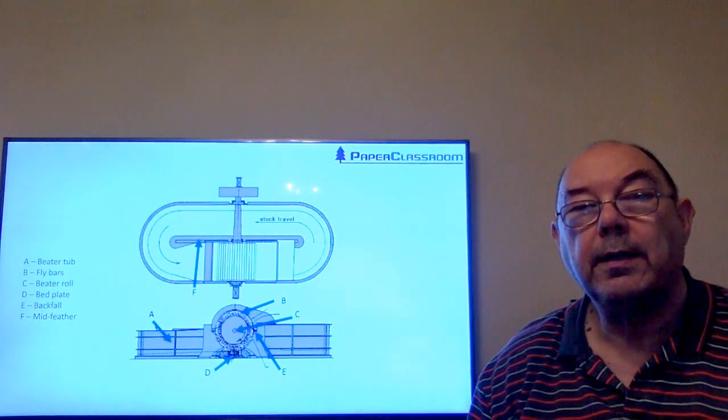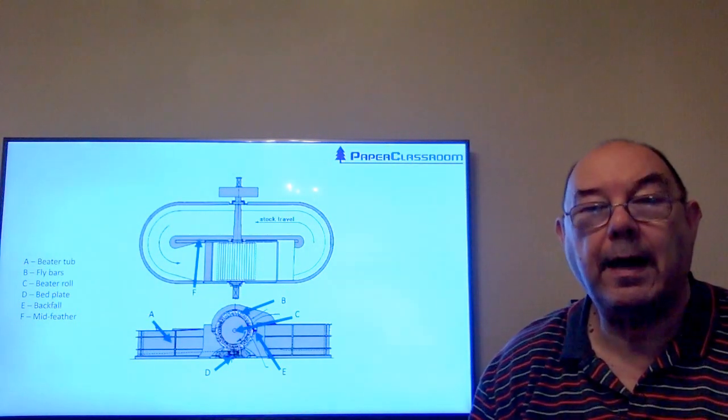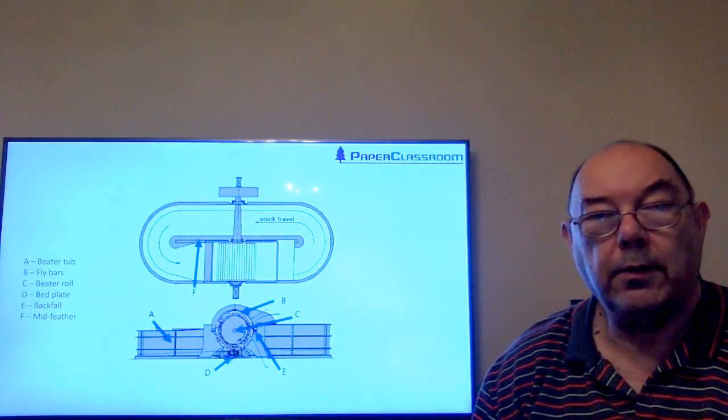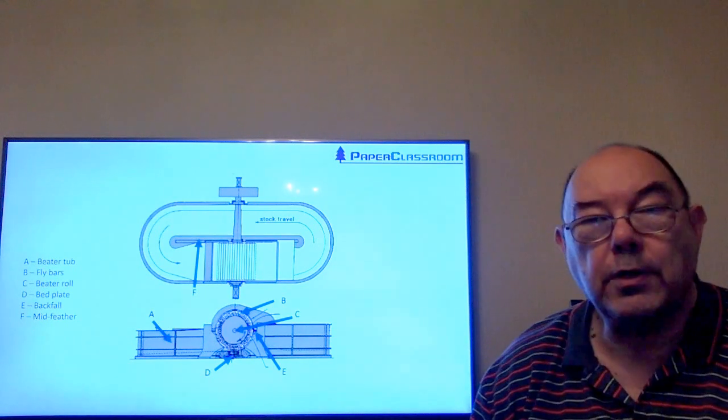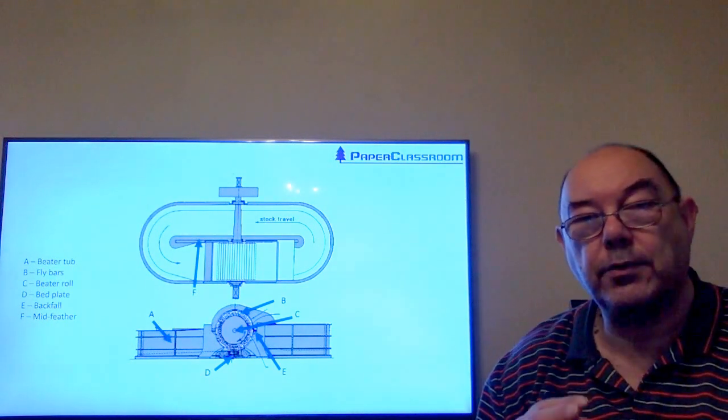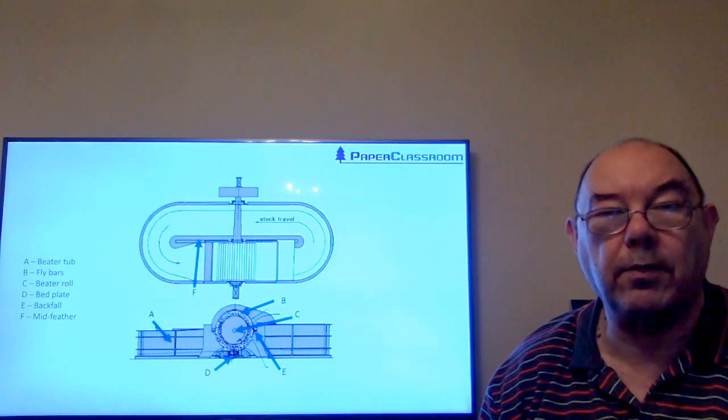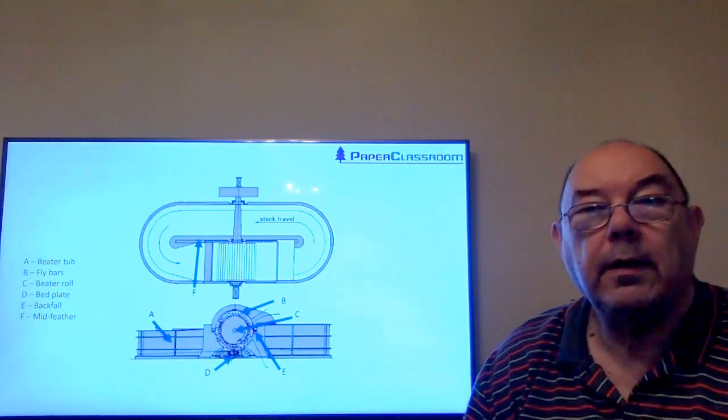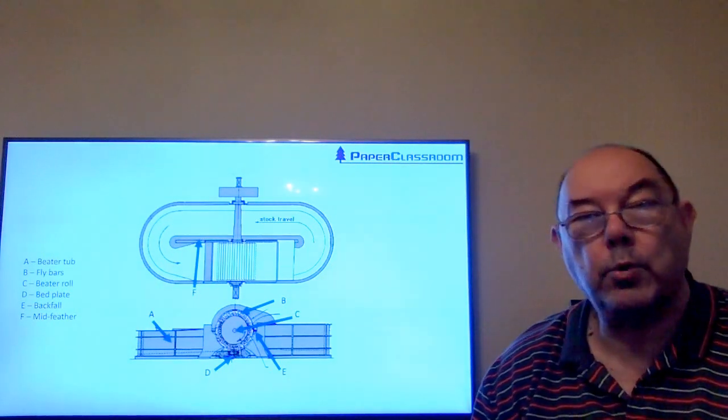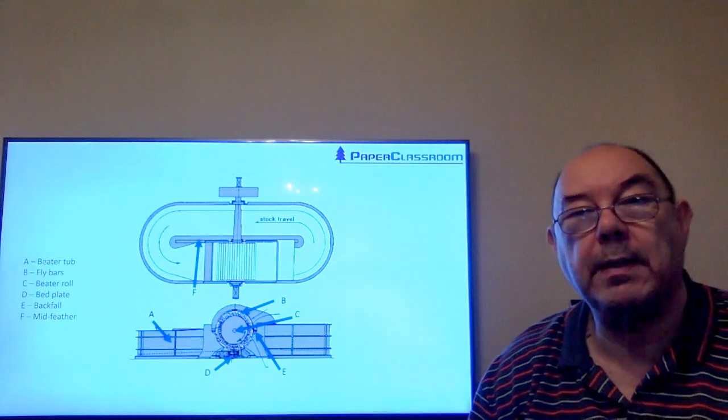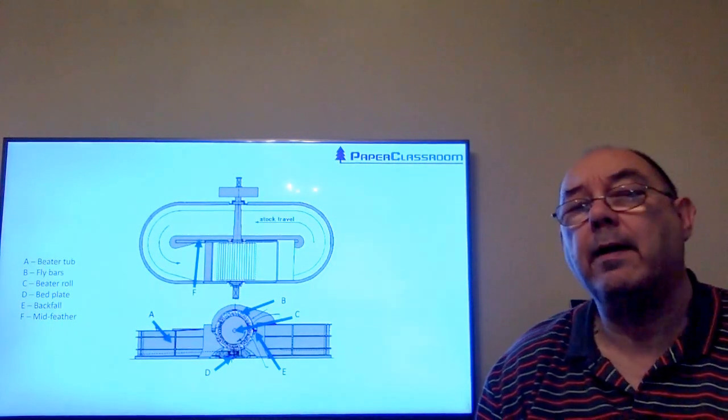The beater roll sits on a bed plate and there are knives on the bed plate as well. As you can see from the arrow in the top diagram, the stock is circulating around, gets pulled underneath the beater roll, and then gets thrown out of the back of the beater roll. The area where it gets thrown out is known as the back fall. We've got the wall that runs down the middle of the beater, and this is called the mid feather.